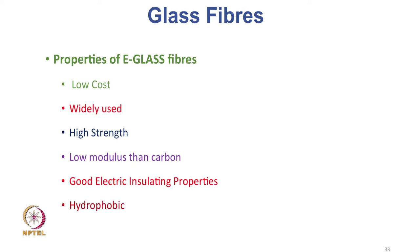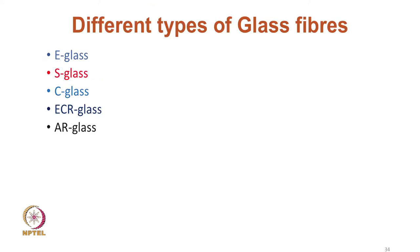E-glass is the most commonly used fibre. It has high strength, good water resistance, good electrical insulation properties, and lower stiffness — characteristics that make it suitable for reinforcement in composites. Apart from E-glass, other types of glass fibres are available: S-glass, C-glass, ECR glass, and AR glass, which can also be used for composite applications.